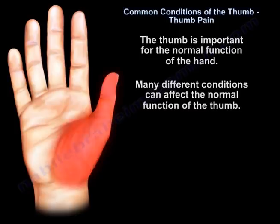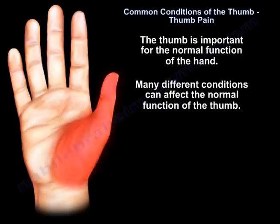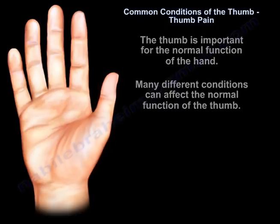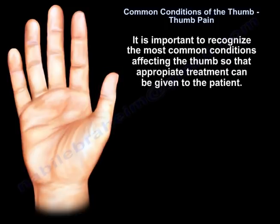Common conditions of the thumb. The thumb is important for the normal function of the hand. Many different conditions can affect the normal function of the thumb. It is important to recognize the most common conditions affecting the thumb so appropriate treatment can be given to the patient.